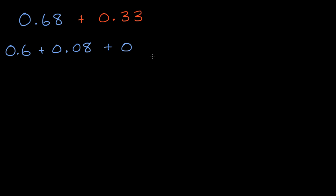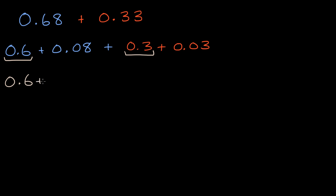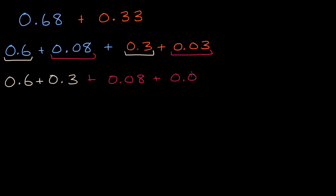So three-tenths plus three-hundredths. Now if I add the six-tenths and the three-tenths — I'm going to write every step here, though you wouldn't necessarily do this in your head or on paper — those are the tenths. And then separately I'm going to add the hundredths, so plus eight-hundredths plus three-hundredths. Six-tenths plus three-tenths — that's hopefully pretty straightforward at this point. That's going to be nine-tenths.